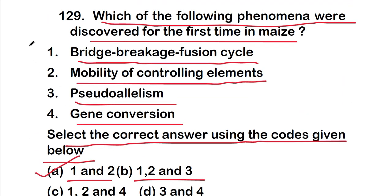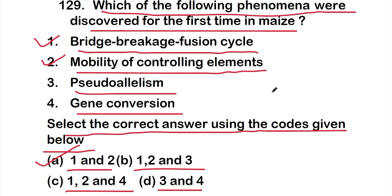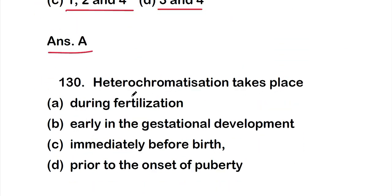Question 129: Which of the following phenomena were discovered for the first time in maize? The answer is that both bridge-breakage-fusion cycle and mobility of controlling elements were discovered for the first time in maize — statements one and two are correct.